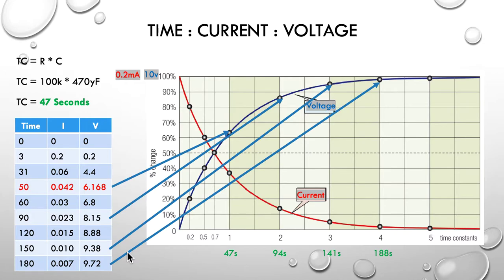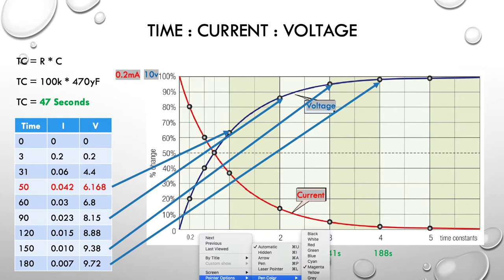And then finally, our fourth time constant, we measured it at 180 seconds, and at 188 is the fourth time constant that we calculated. And again, you can see, very close. It's right up in here at about 97%, or 9.7.